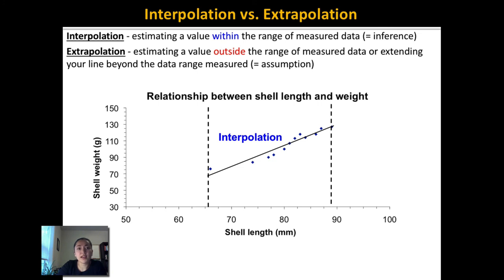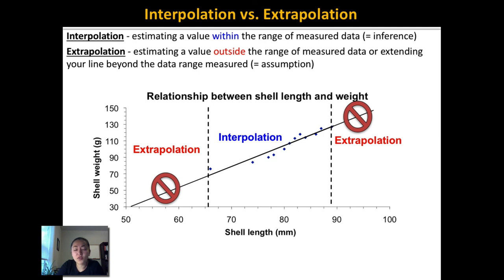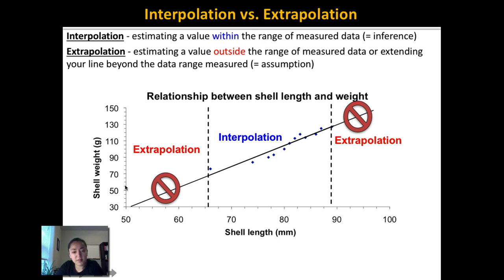An extrapolation would be estimating a value outside the range of measured data, or extending your line beyond the data range measured. You do not want to extend your line out beyond the data. For example, if I were to say that around 60 millimeters it's going to weigh 55 grams — that would be an extrapolation, because I didn't collect any data less than about 65 millimeters, so I can't make those estimations.